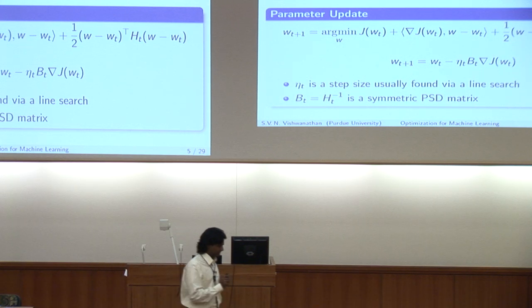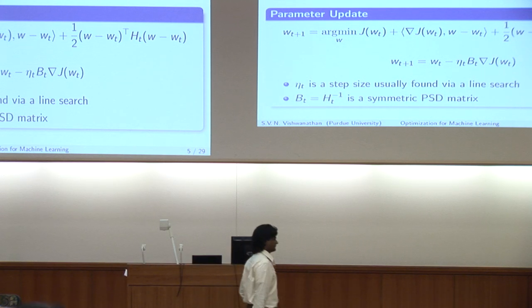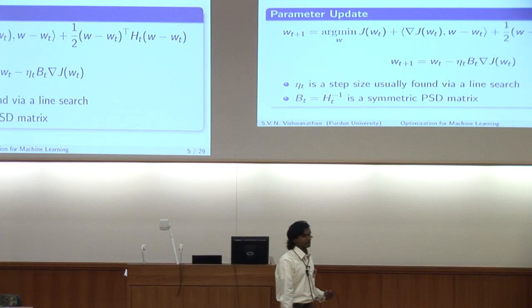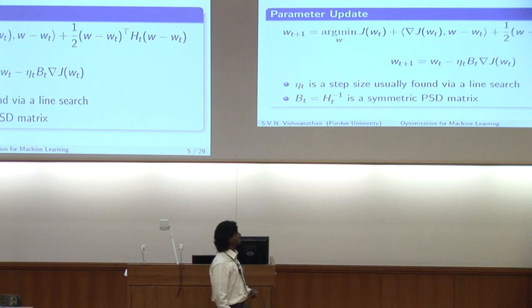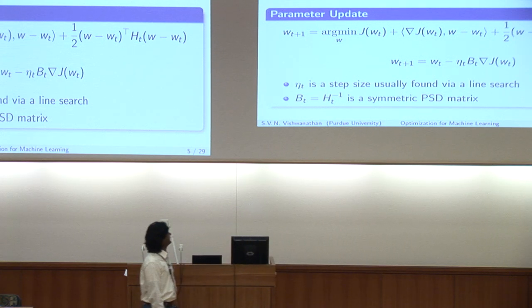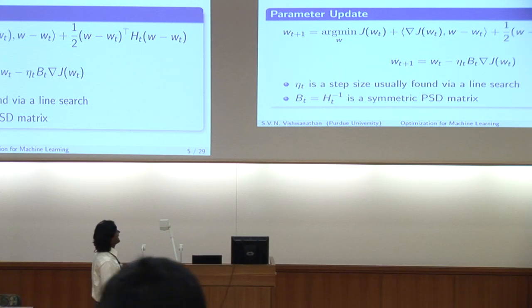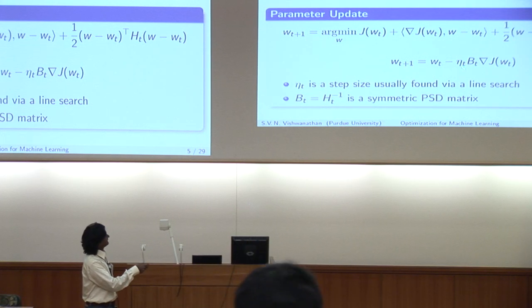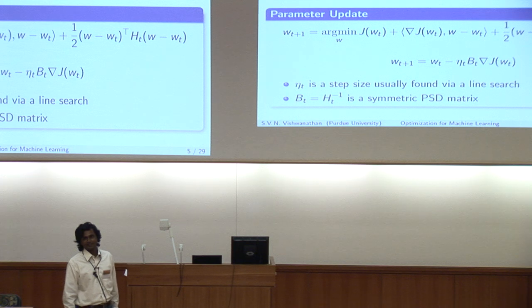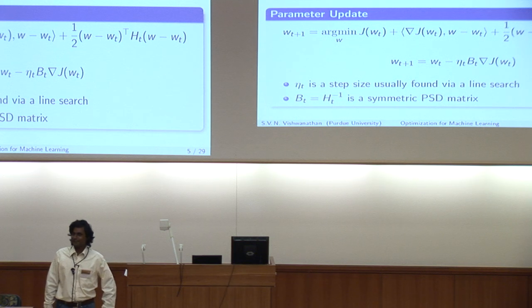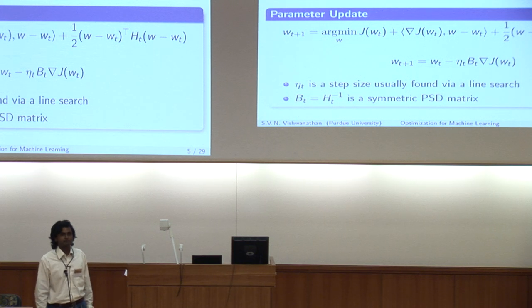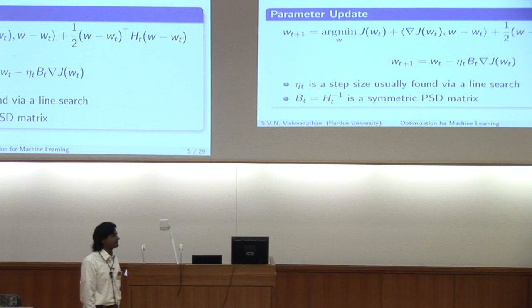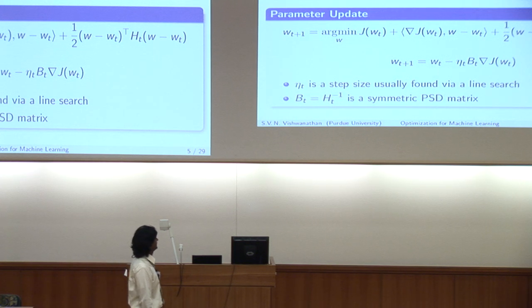Now the question that must be burning in your mind — and I am sure many of you thought about this in the break — is: how do you find this approximation? How do you find this Bt? Where did this beast come from and how do you find it?